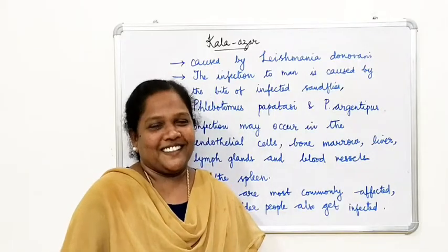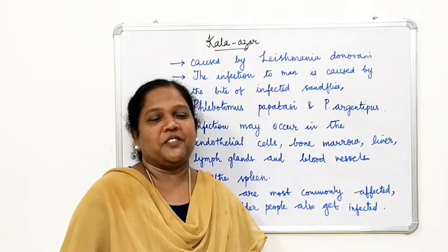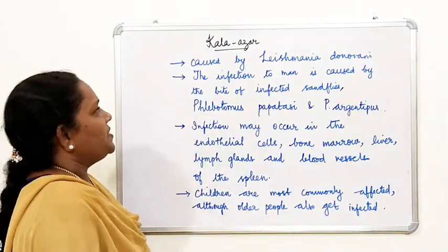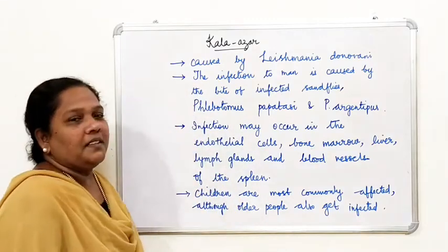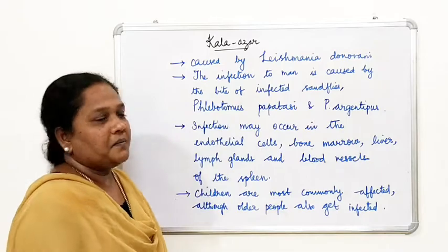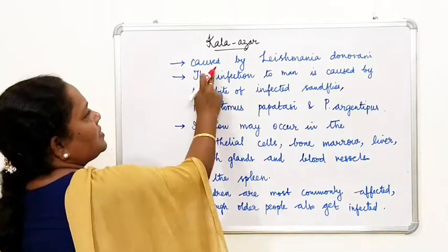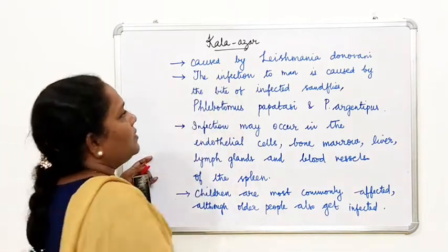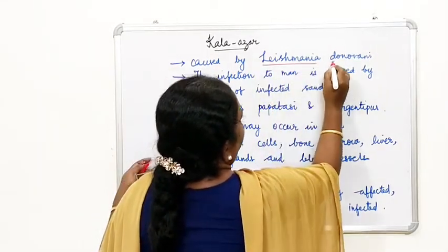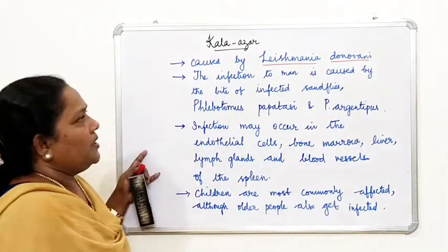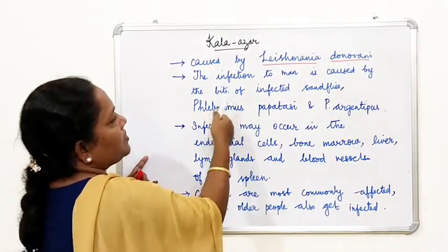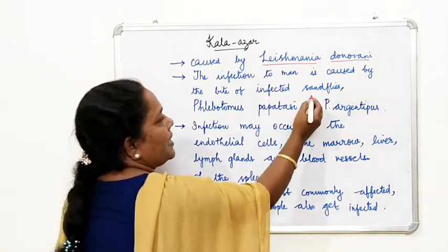Let us continue with the chapter Human Health and Diseases, part 10. We are going to learn about the protozoan disease called Kala Azar. This disease is caused by a protozoan named Leishmania donovani. The infection in man is caused by the bite of an infected sand fly.